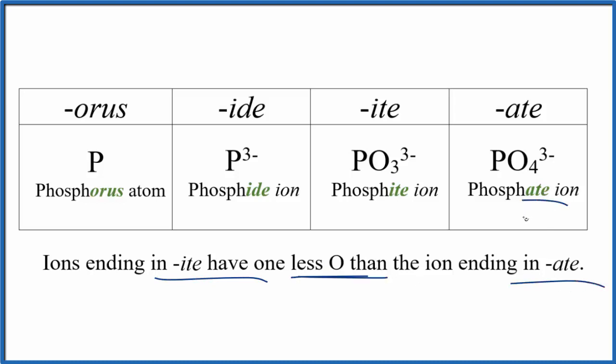Think of A-T-E as greater. So for the phosphate ion here, we have PO4 three minus. The phosphite has just one less oxygen, PO3 three minus.